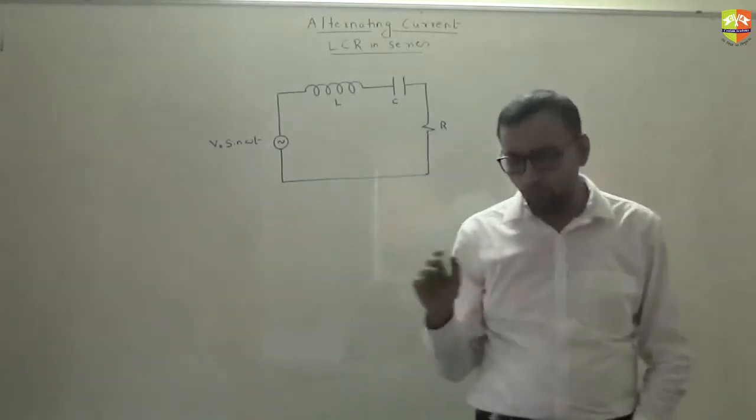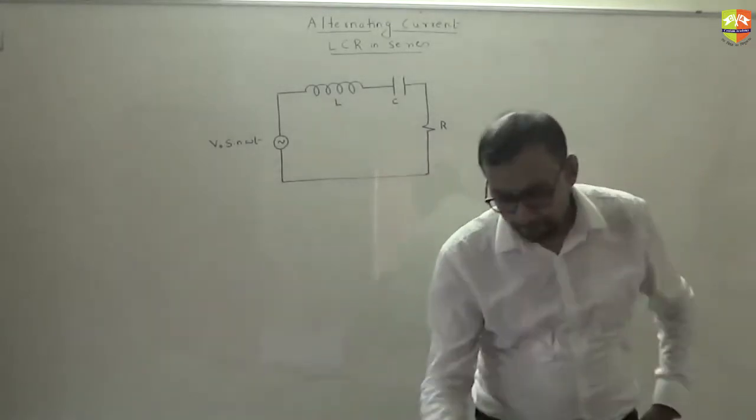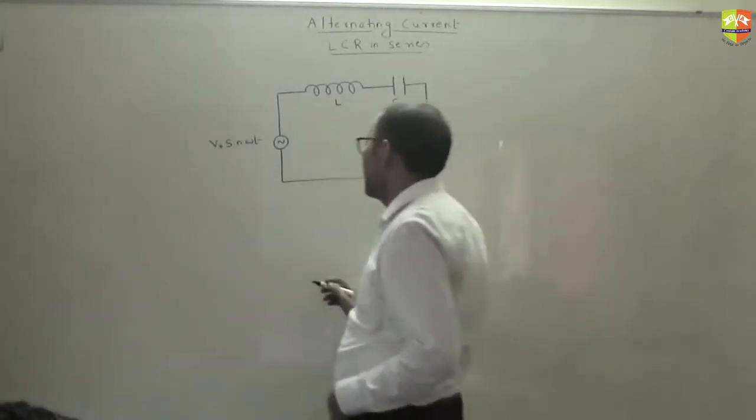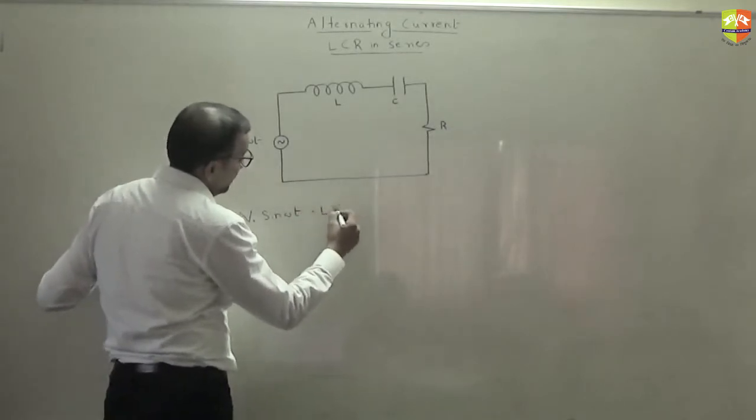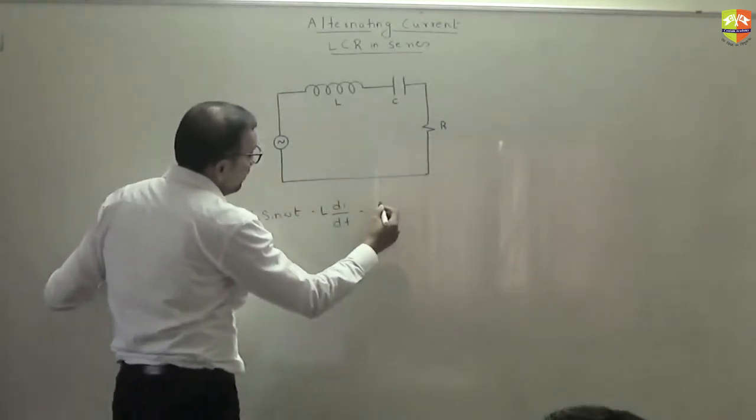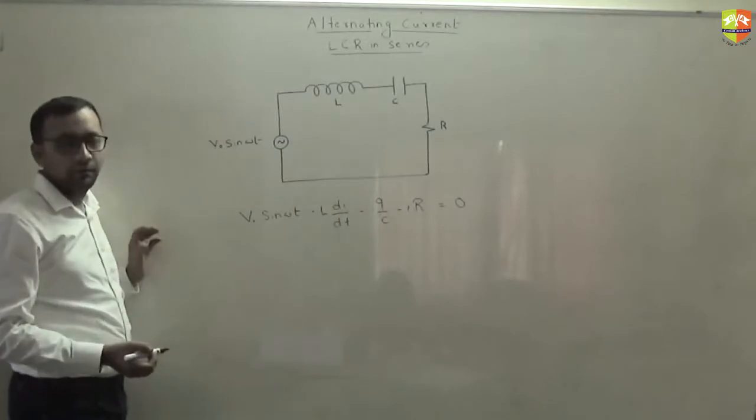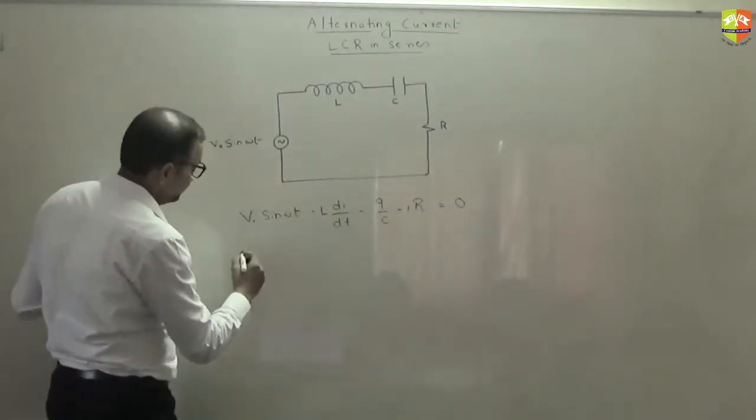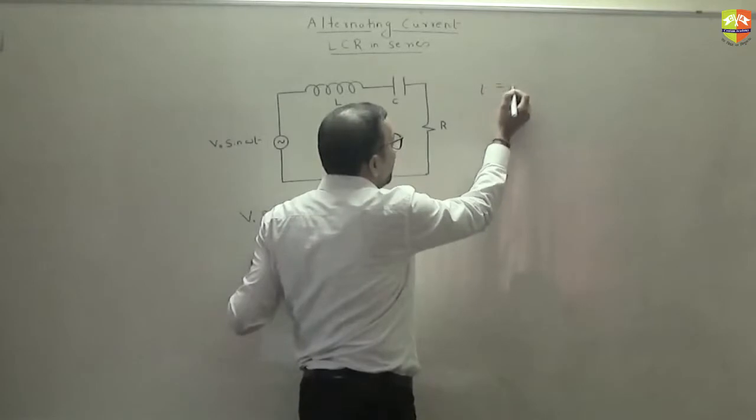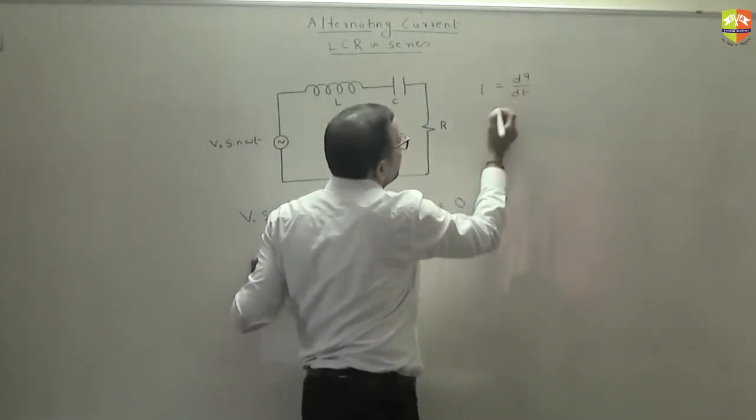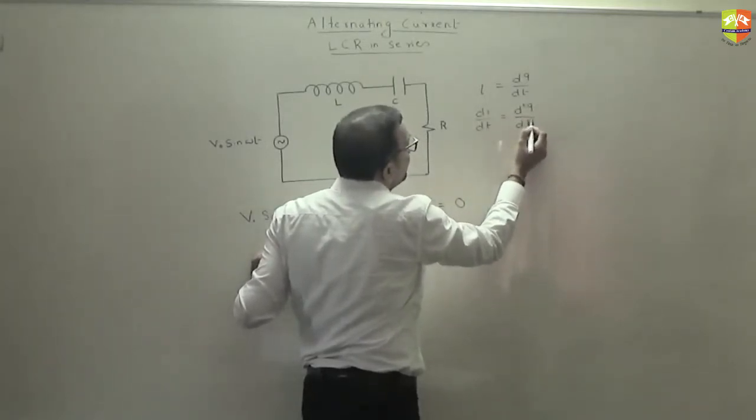Write down the equation, the loop equation. So we will have V0 sin omega t minus L di by dt minus q by c minus R. If I take all of this current term to that side, I can write - by the way, we have this equation, current is equal to dq by dt, and di by dt will then become equal to d square q by dt square.